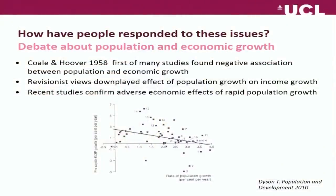Another debate among economists is about the relationship between population growth and economic growth. Early studies suggested a negative association; revisionist views downplayed the effect of population; and more recent studies have confirmed the adverse economic effects of rapid population growth. Part of the reason for changing views is that initially there wasn't enough long-term data, and the rapid economic growth after World War II swamped the effects. Once economic growth slowed, the adverse effect of population growth became more apparent.